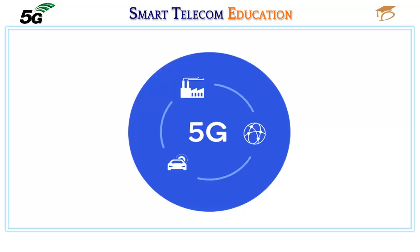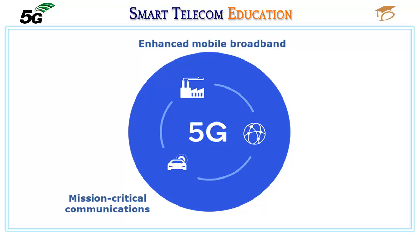5G is used across three main types of connected services, including enhanced mobile broadband, mission-critical communications, and massive machine communications. A defining capability of 5G is that it is designed for forward compatibility — the ability to flexibly support future services that are unknown today.